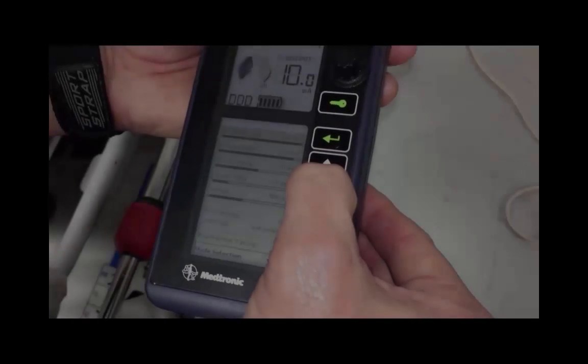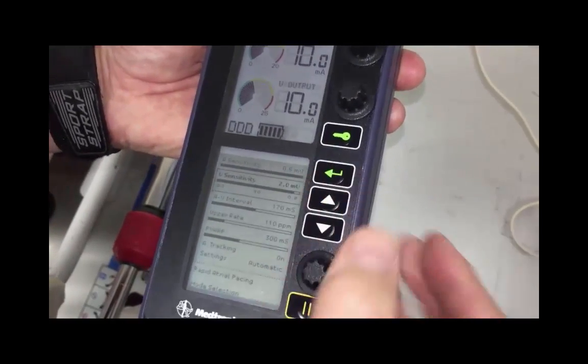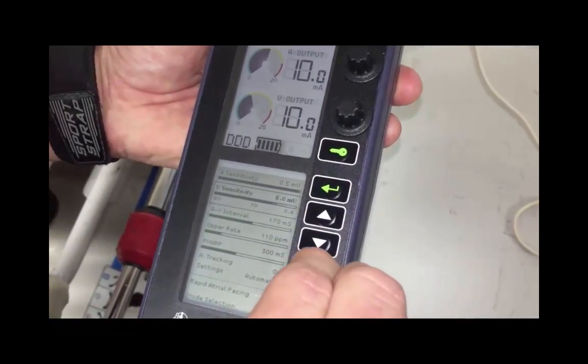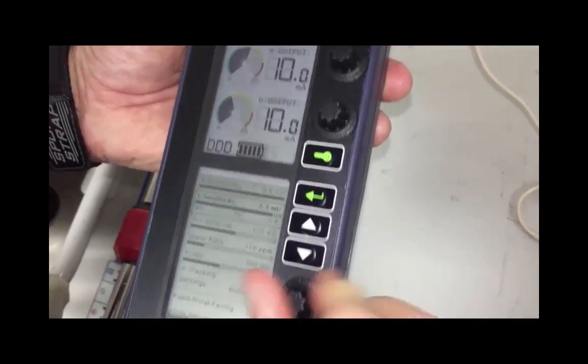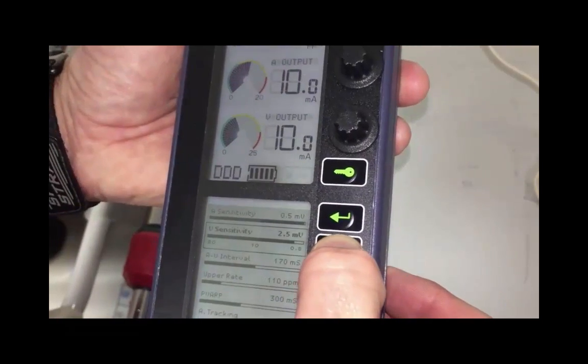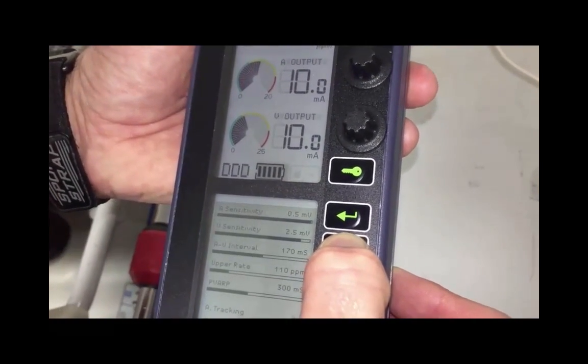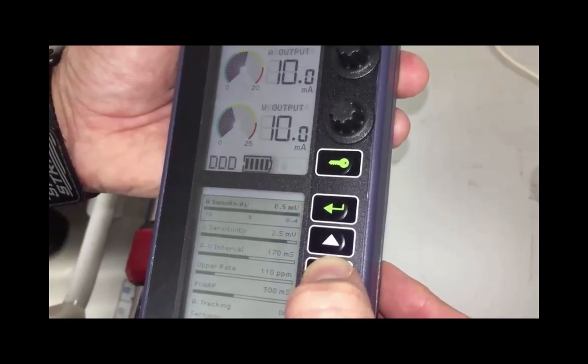As previously discussed, there may be a time where you will need to adjust either the atrial or ventricular sensitivity. That is easily done in the lower screen menu by selecting either the A or V sensitivity and then using the dial to adjust. Remember that when you are increasing the sensitivity, the millivolts goes down. When you are decreasing the sensitivity, the millivolts go up.